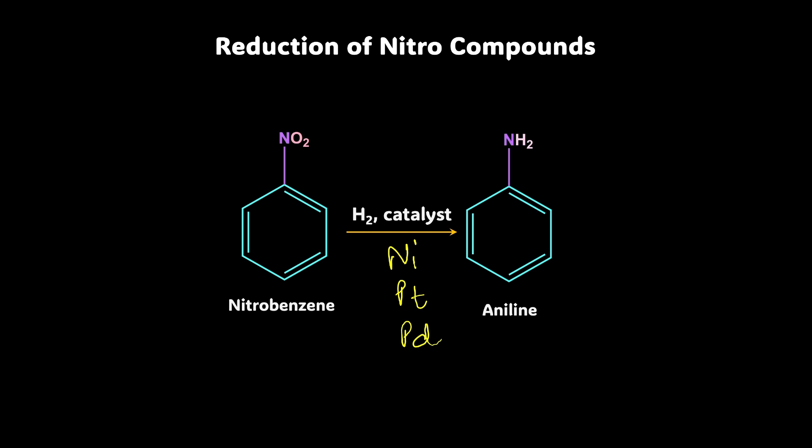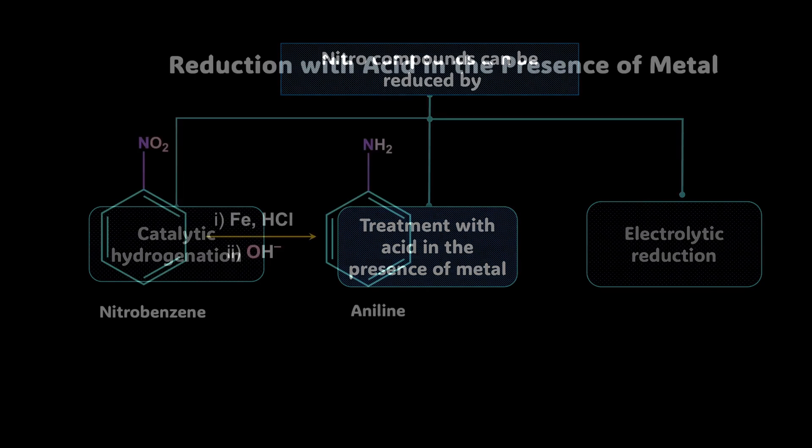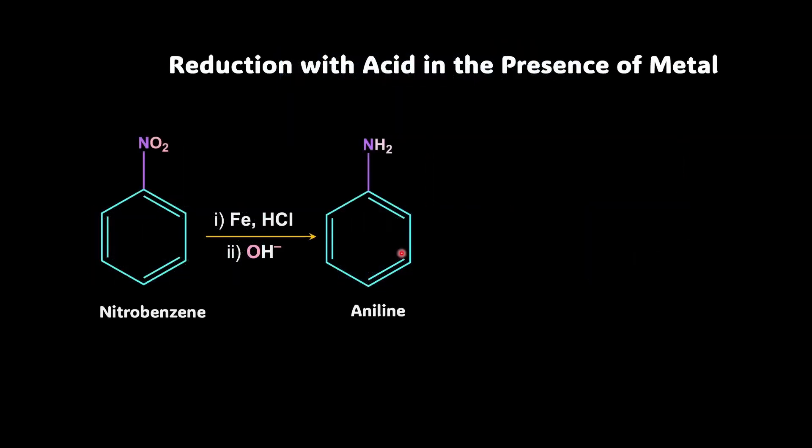Now, the other method that can be used is the treatment of the nitro compound with acid in the presence of metal. Now, the metal that will be used with acid is different. So you can either use iron or tin or in fact, you can even use zinc. But with that, you would have to use an acid like hydrochloric acid in this case. So the first part is you're going to use hydrochloric acid, let's say with a metal, say iron out here, okay?